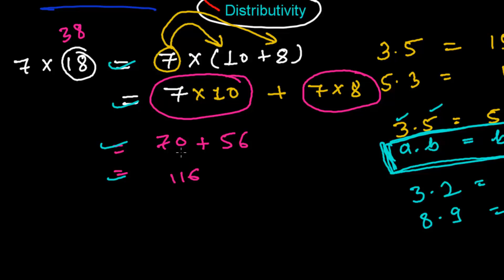And let's now suppose, instead of writing 7, I'm going to write here one any variable, A. And instead of writing 18, which is ultimately 10 plus 8, I'm going to choose another two variables. Let's say B plus C.